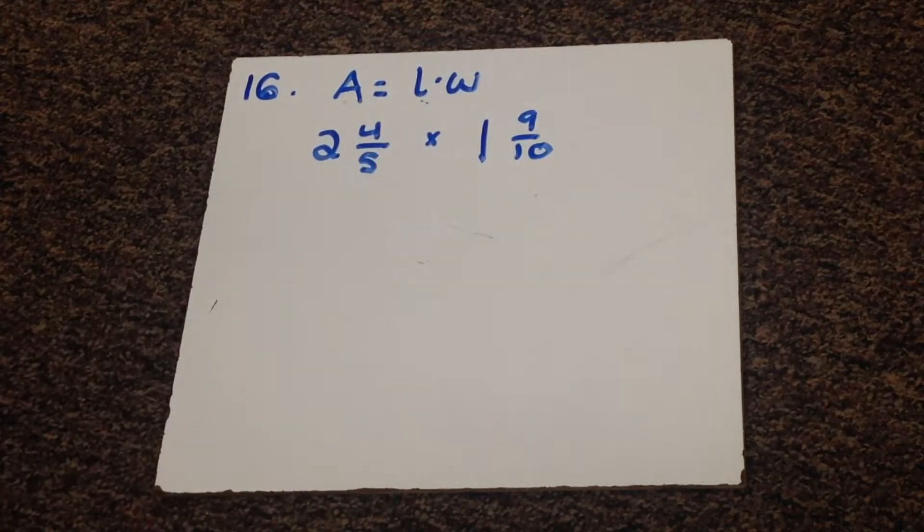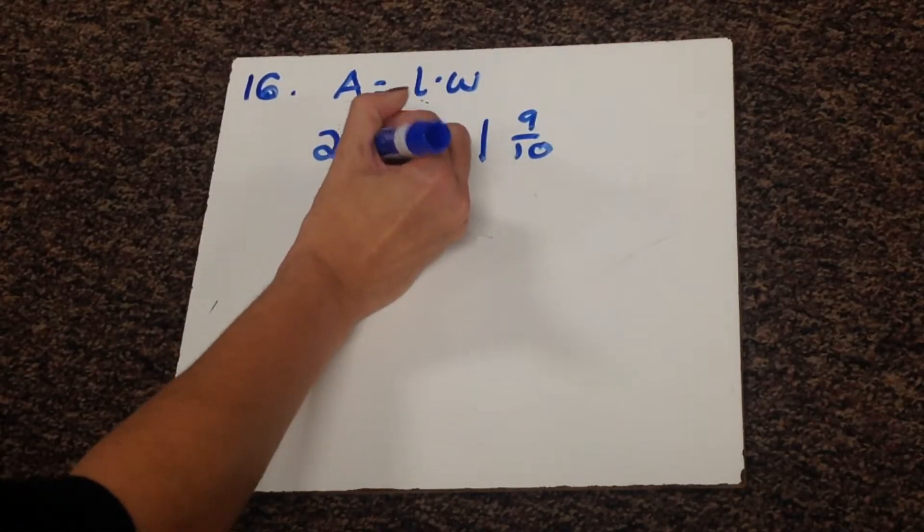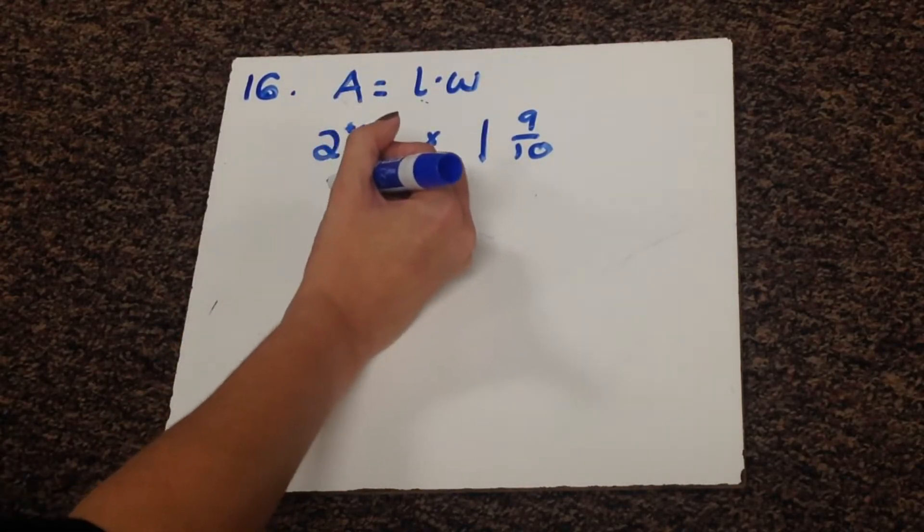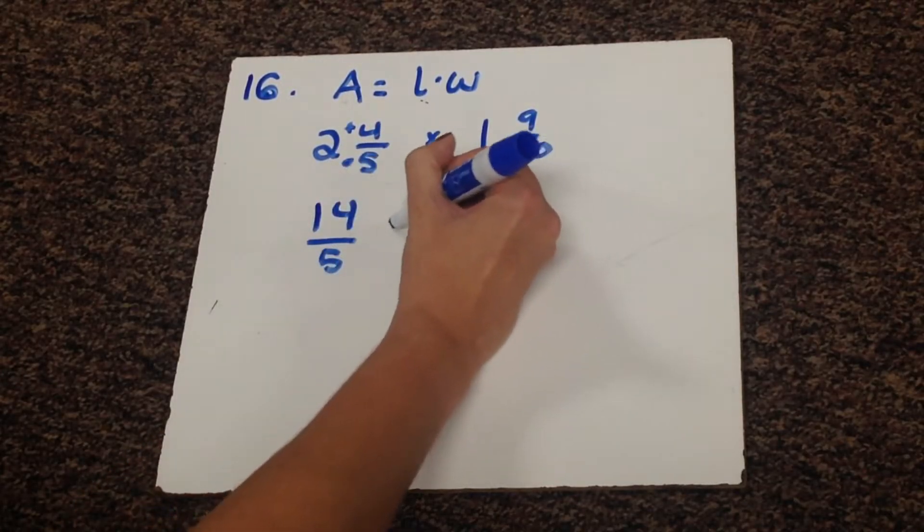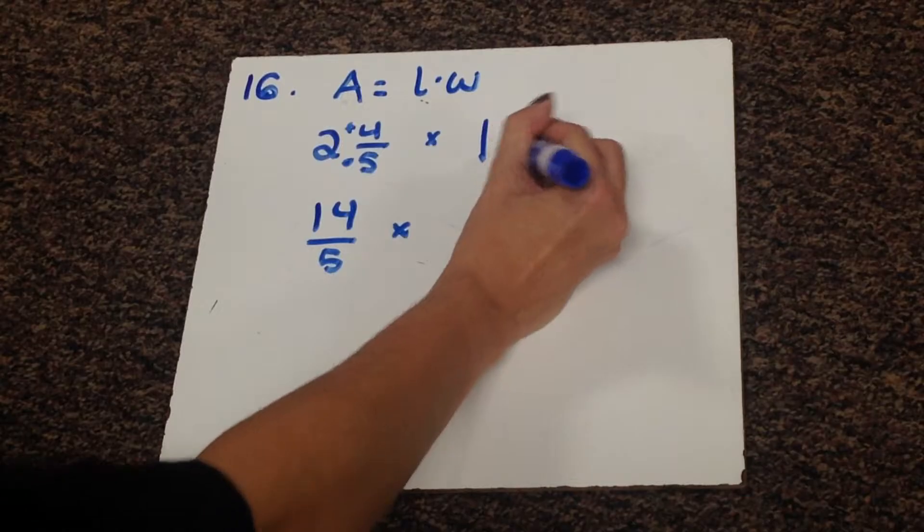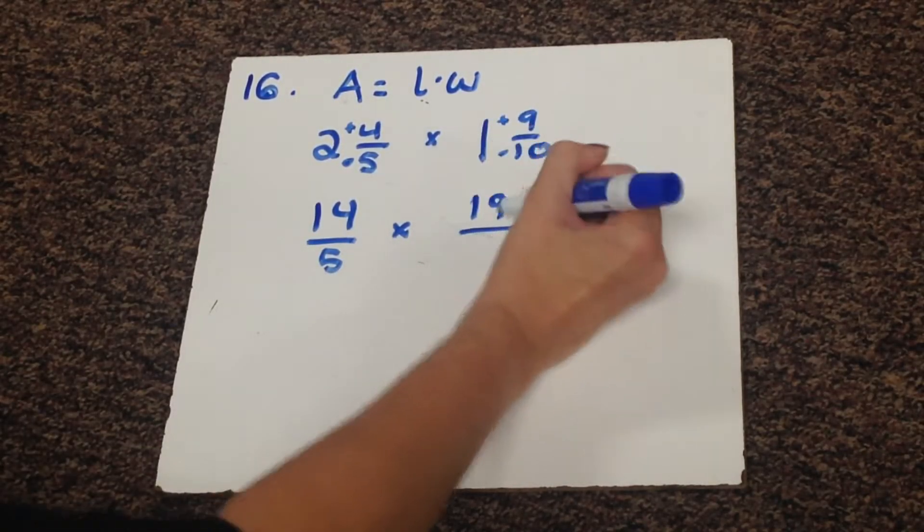You're going to start out by changing those into improper fractions. So 5 times 2 plus 4. 5 times 2 is 10, plus 4 is 14 over 5. Times 10 times 1 is 10, plus 9 is 19 over 10.